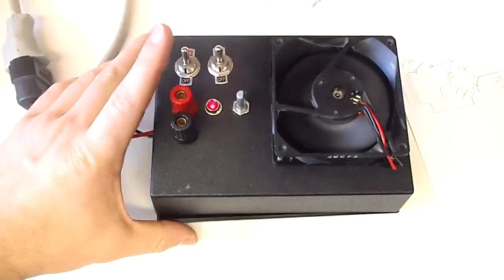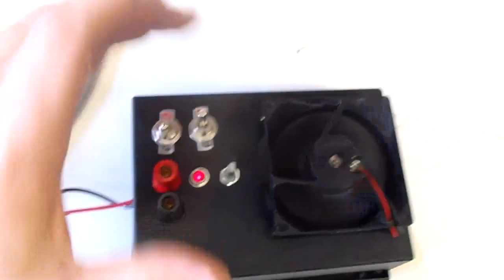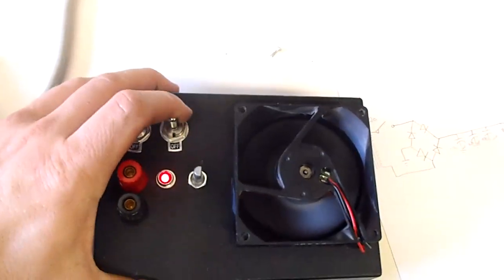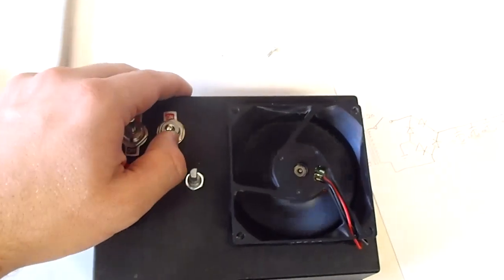Okay, so this is my basic variable power supply. Now the options that you see here are the on-off. This is a fan on-off, so that way if you have a bigger load, you can turn it off.